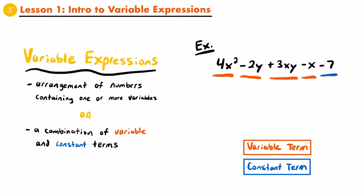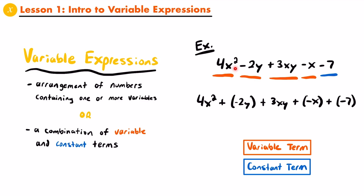We could rewrite this variable expression such that you are adding all of the terms together: 4x squared plus (negative 2y) plus 3xy plus (negative x) plus (negative 7). Remember that adding a negative number or a negative value is the same as subtracting that value. So everywhere we are subtracting something, you could really think of it as just adding a negative term. It is helpful to include parentheses around those negative terms so that you can clearly see and distinguish each term.